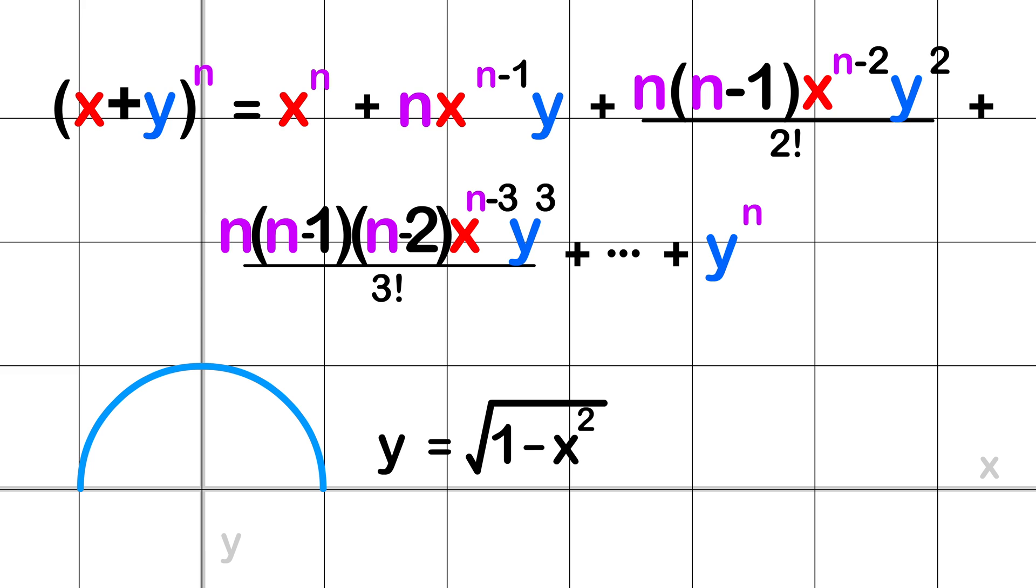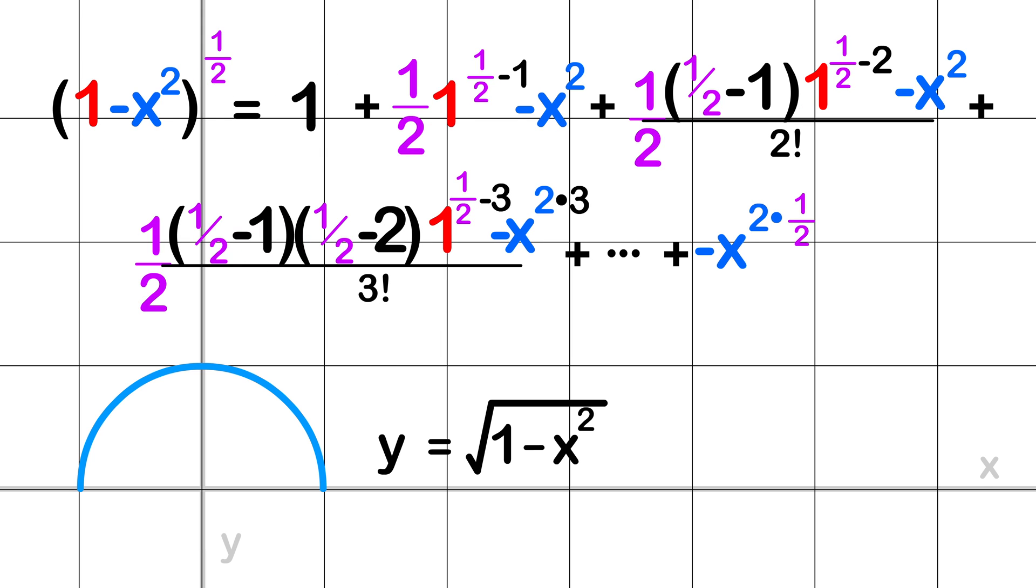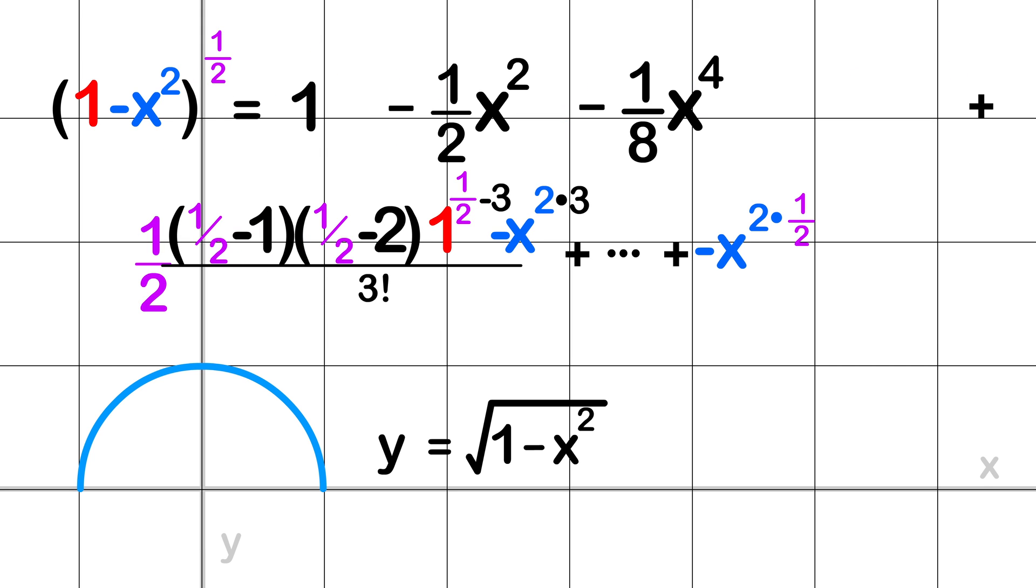What Newton did next was he applied the binomial expansion to the equation of a circle where the exponent is 1 half. This still represents the equation of the circle, but in binomial form.